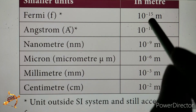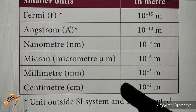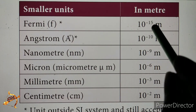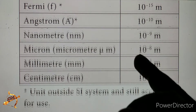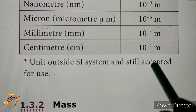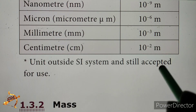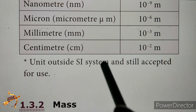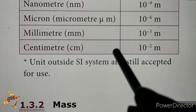Fermi is another small unit of length. Some units outside the SI system are still accepted for use.